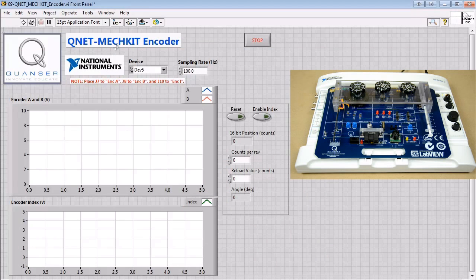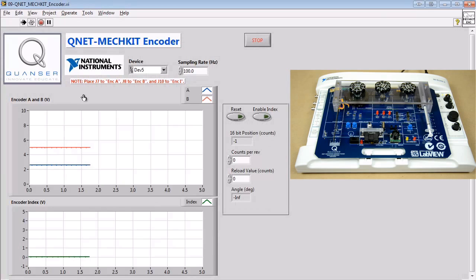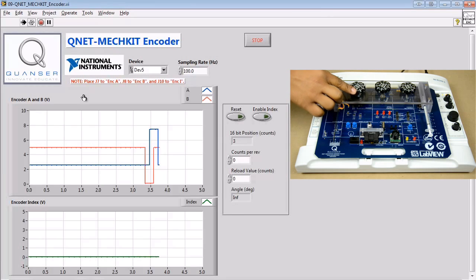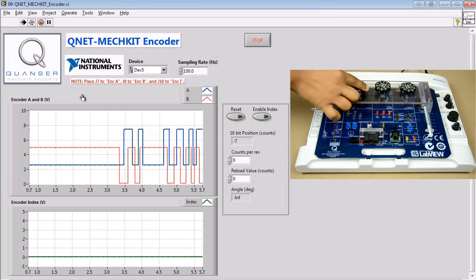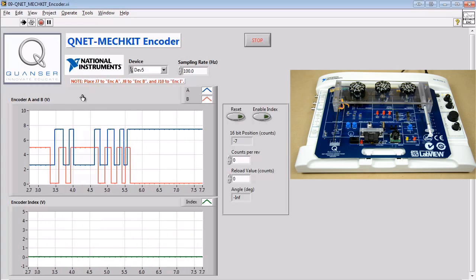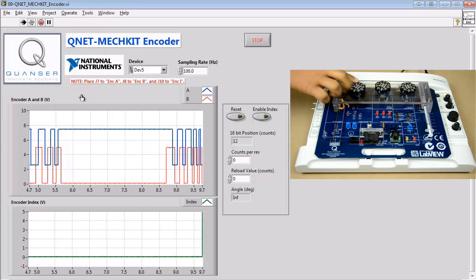We begin by qualitatively analyzing the encoder signals measured when turning the knob attached to the encoder both clockwise and counterclockwise. We'll also investigate the use of the index pulse.